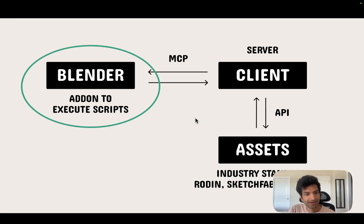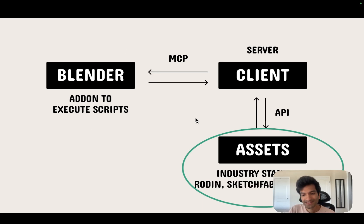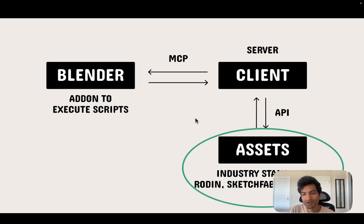The reason this is possible in the first place is because Blender has scripting — code can be executed inside Blender, which is a big part. Blender is also pretty flexible with downloading assets and importing, and that makes life much easier. The cool thing with assets is that clients can connect to any API. Right now you can write any prompt and it will get the right asset for you — you can say I want a zombie and it will get the right asset, AI generated on the spot, described however you want.